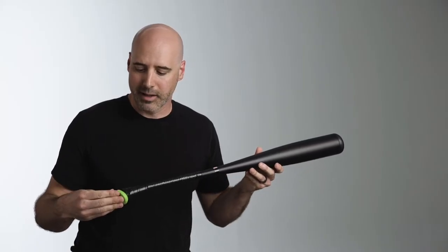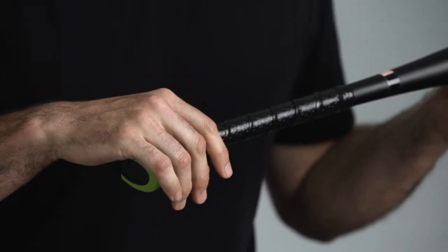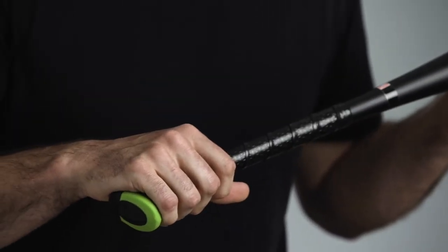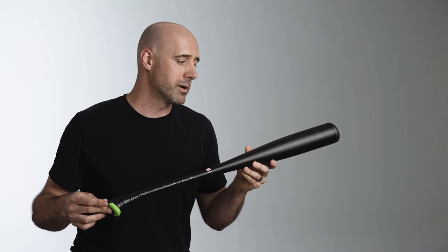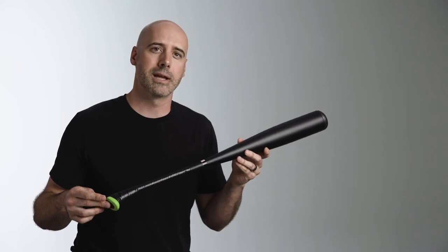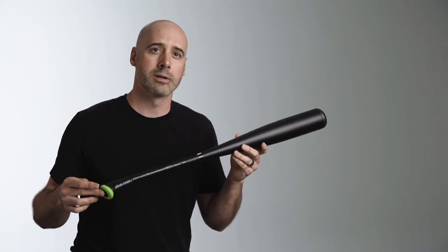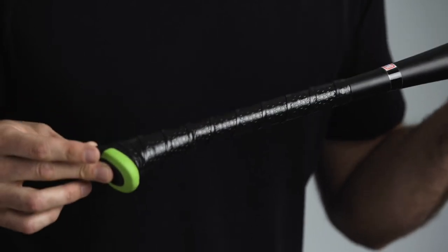With the Axe Bat, because the handle gives the players more control of the barrel and more bat speed, it allows a smaller player to still have the same bat speed that they did with the lighter youth bats of last year.